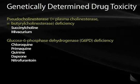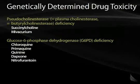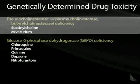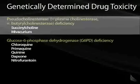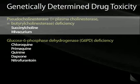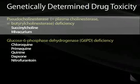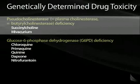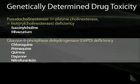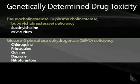Some drug toxicities are related to pharmacogenetics and pharmacogenomics. Two important enzymes that differ from person to person include pseudocholinesterase and glucose-6-phosphate dehydrogenase, or G6PD. Pseudocholinesterase, also known as butyrylcholinesterase, can be deficient in certain people. Those patients that take succinylcholine will not be able to break it down as quickly, which can cause prolonged sedation and anesthesia.